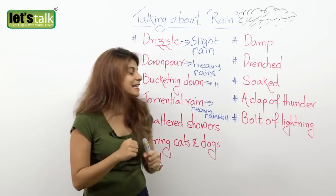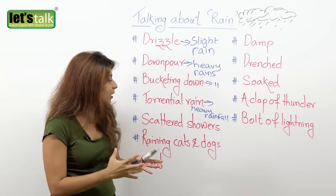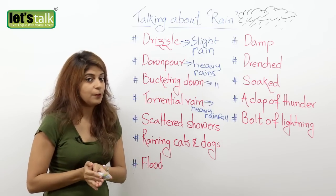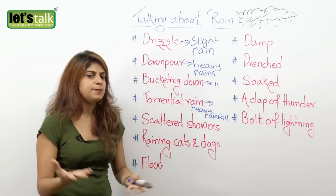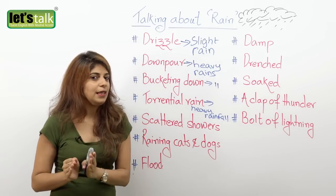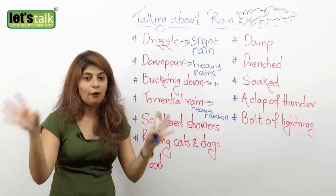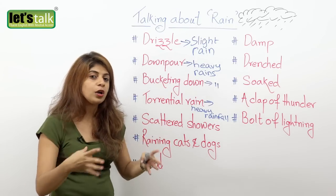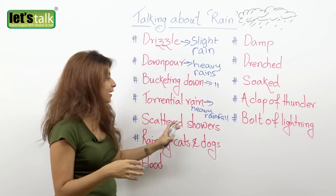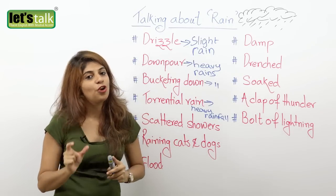The next one is scattered showers. Now scattered showers is a term or phrase used by weather forecast people. They would say, well the city would experience scattered showers. What exactly does that mean? It means the city would face on and off rains for a very short period throughout the day. So it won't constantly rain — it's going to be scattered showers, raining on and off for a very short period.